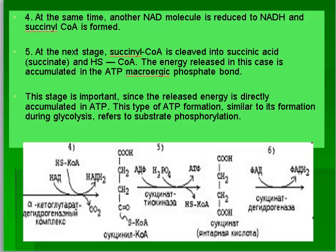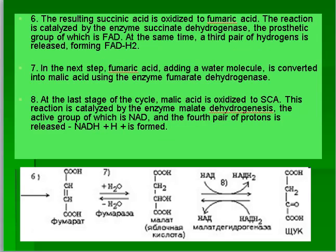The resulting succinic acid is oxidized to fumaric acid. This reaction is catalyzed by the enzyme succinate dehydrogenase, whose prosthetic group is FAD. A third pair of hydrogen is released, forming FADH₂. In the next step, fumaric acid adds a water molecule and is converted into malic acid using the enzyme fumarate hydratase.